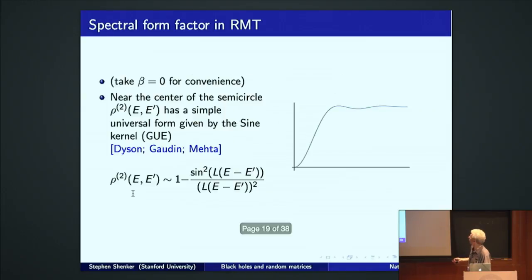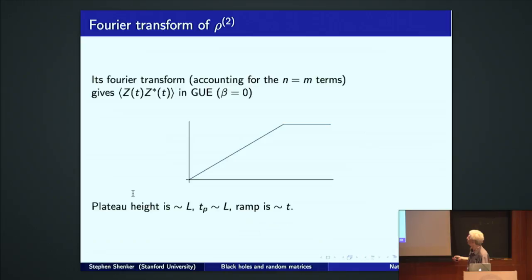If you take that Fourier transform, the Fourier transform of this is that, a ramp and a plateau. I've included the M equals N term back. So what the ramp and the plateau are diagnosing is this eigenvalue, eigenvalue correlation function. In the proper normalization, the plateau height is L. That's just one partition function if beta is equal to zero. The ramp is just a linear line. This characteristic break is at this time scale set by the eigenvalue spacing. It's a time L. So you have a linear function T running from zero to L and then it's at height L. That's the characteristic topography of this function.